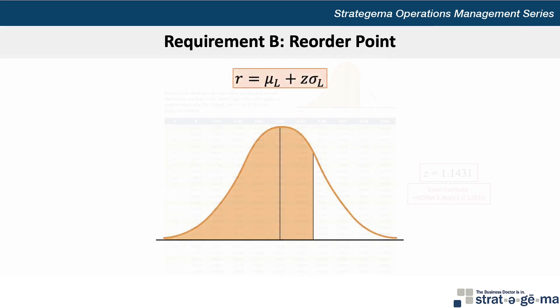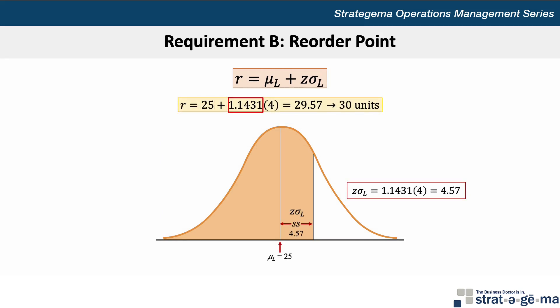Now we can complete our calculation for the reorder point, which equals the lead time demand of 25, plus a Z value of 1.1431 times the standard deviation of 4, which equals 29.57 units, which we would round to 30. Our conclusion for this requirement is that the reorder point is 30 units, and the probability of a stockout is 12.65%.